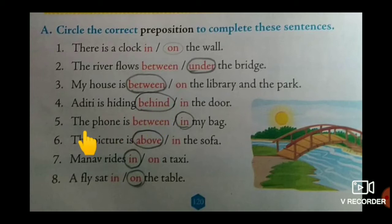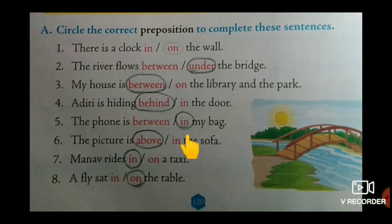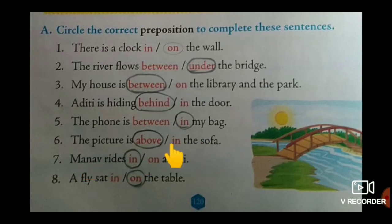Next one: the phone is in my bag. 'Between' means middle, so that is not correct here. 'In' is the suitable preposition — inside the bag. Next: the picture is above the sofa. 'In the sofa' is not possible. 'Above' means up, so the suitable word is 'above.'